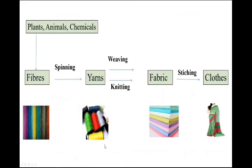This summarizes the whole process: fibers obtained from plants, animals, or chemicals are first converted into yarn by spinning. Yarns are then converted to fabrics either by weaving or knitting. Finally, the fabrics are converted to clothes by stitching.